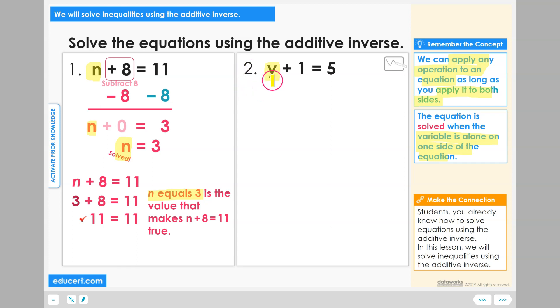All right, let's check your work. To solve for y, the first additive inverse you should use would be to subtract 1, and to keep the equation balanced, we subtract 1 on both sides.